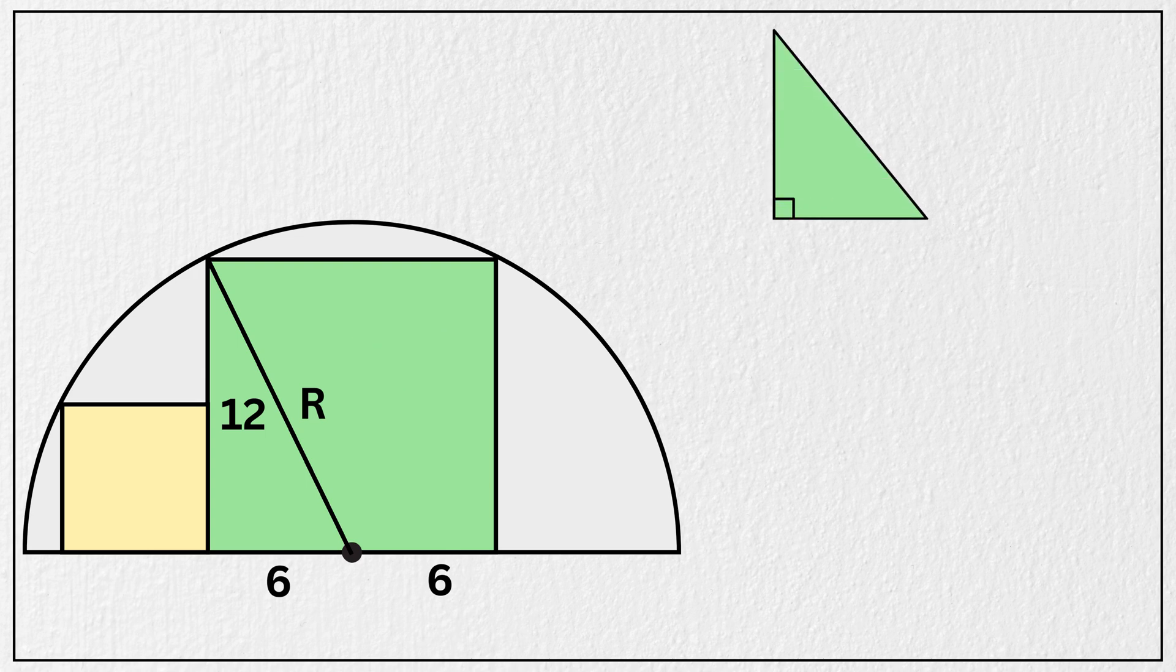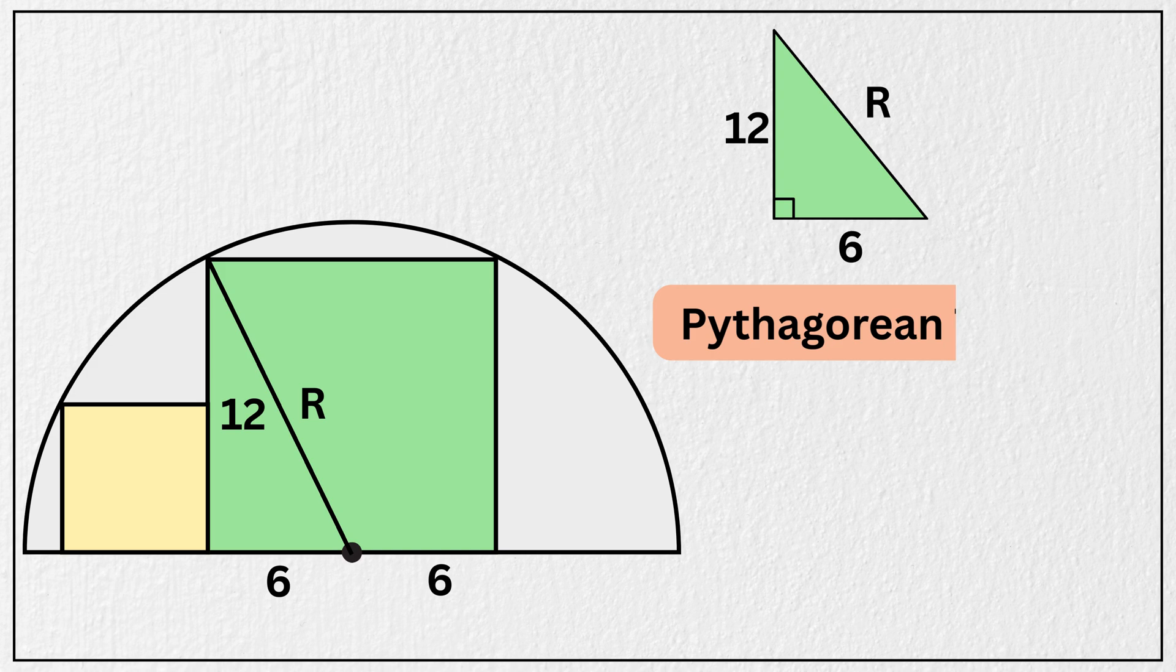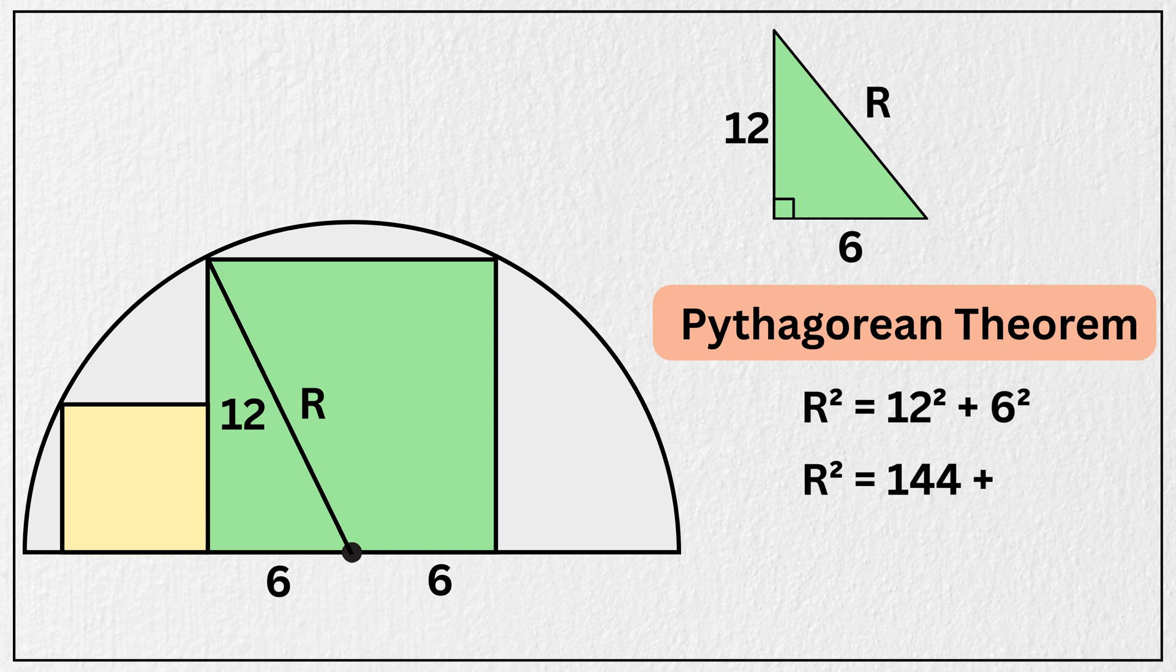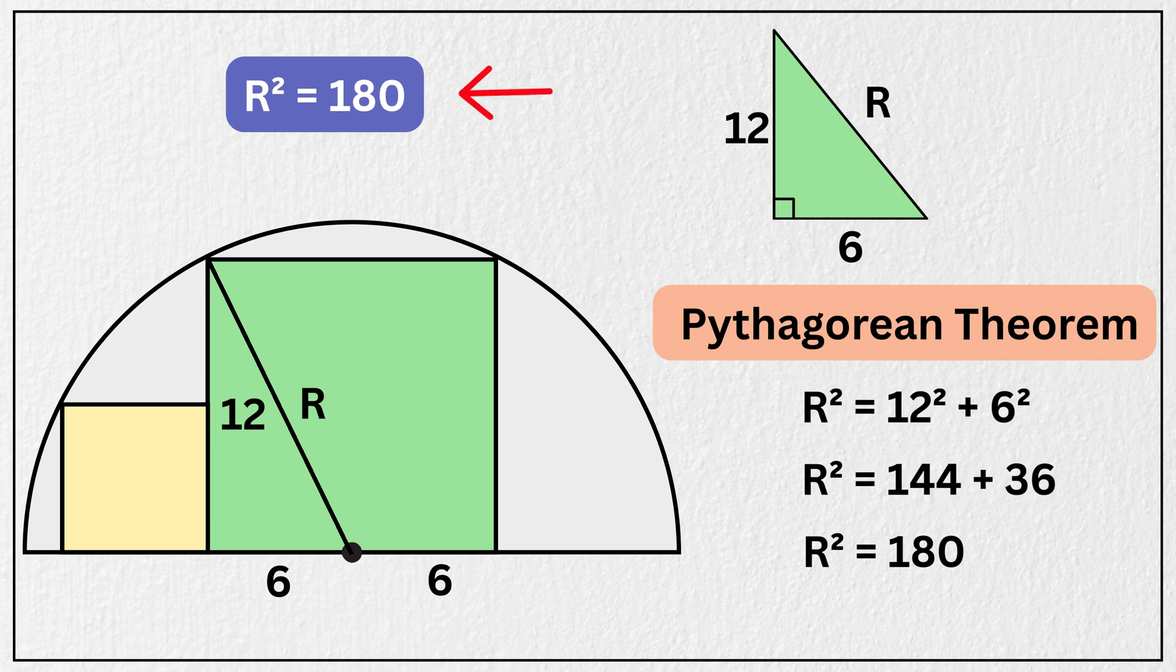And look at this green right triangle. The height of this triangle is 12 units, the base is 6 units, and the hypotenuse is r. So applying the Pythagorean theorem we have r squared equals 12 squared plus 6 squared. Simplifying this we get r squared equals 144 plus 36, which gives r squared equal to 180. Let's keep this value of r squared here.